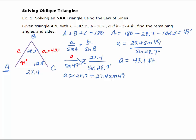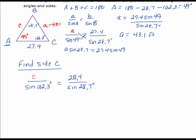We'll set up another ratio. Our new ratio would be side C over the sine of angle C equals side B, which is 27.4, over the sine of angle B, which is 28.7. We get C times the sine of 28.7 equals 27.4 times the sine of 102.3, dividing each side by the sine of 28.7.